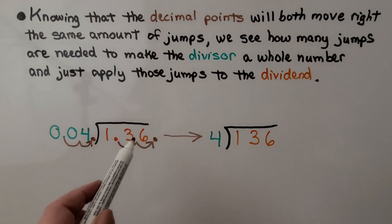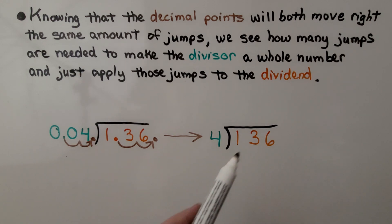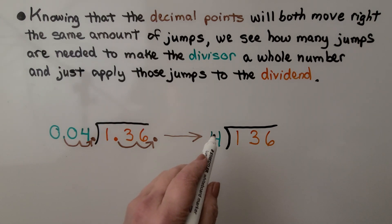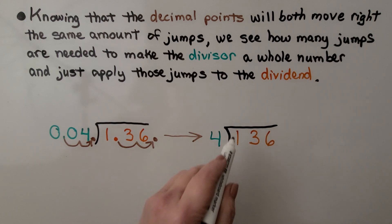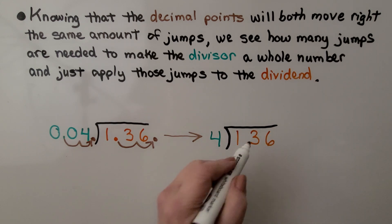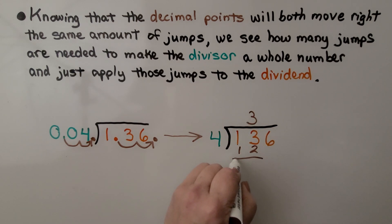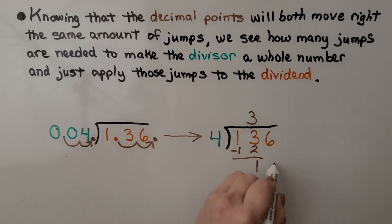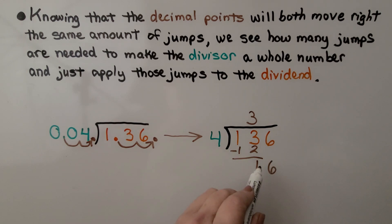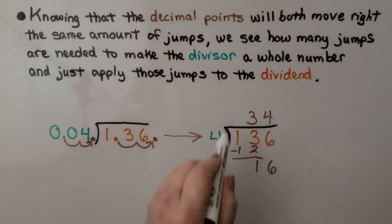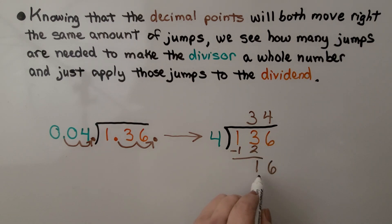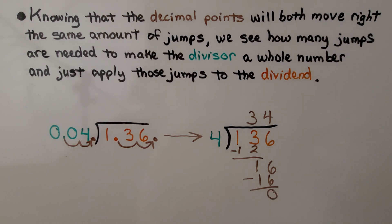Now instead of 1 and 36 hundredths divided by 4 hundredths, we have 136 divided by 4. We use the standard algorithm — the regular way to do long division. 4 can't fit into 1, so we're not putting the answer there. 4 can fit into 13 three times because 4 times 3 is 12. We subtract that 12 and get a 1. It's the 6's turn to come down. 4 fits into 16 four times because 4 times 4 is 16. We subtract the 16 and get a zero remainder. We know the answer is 34.